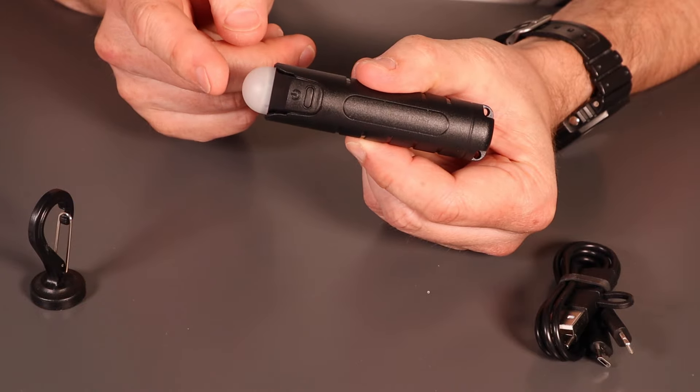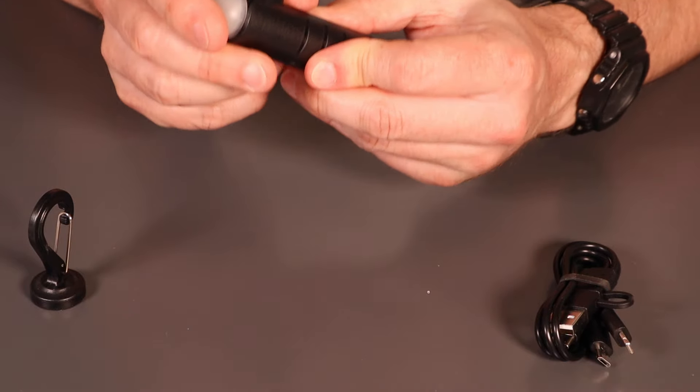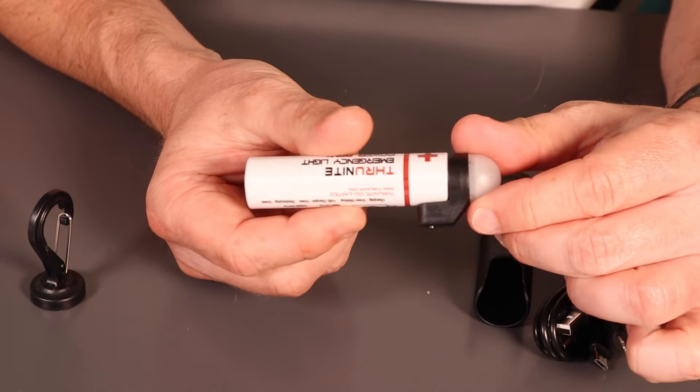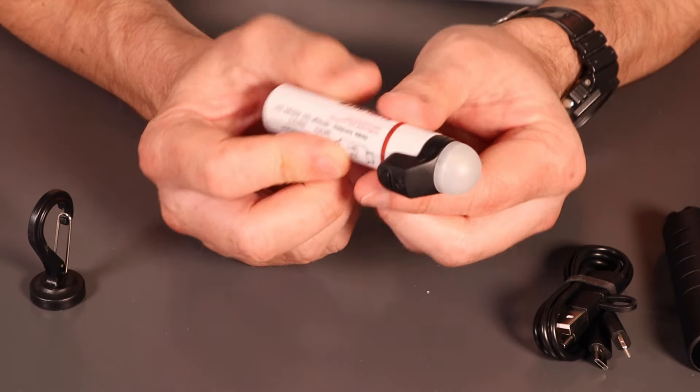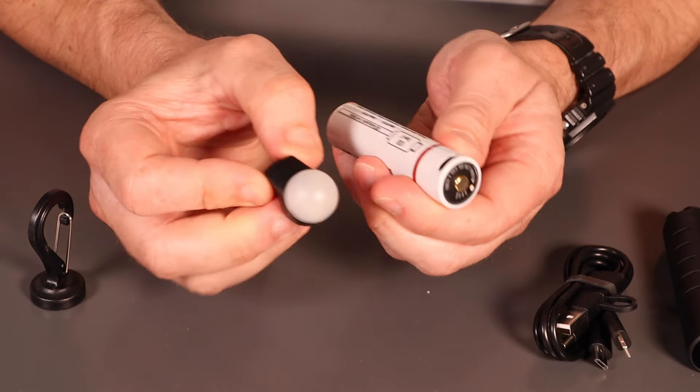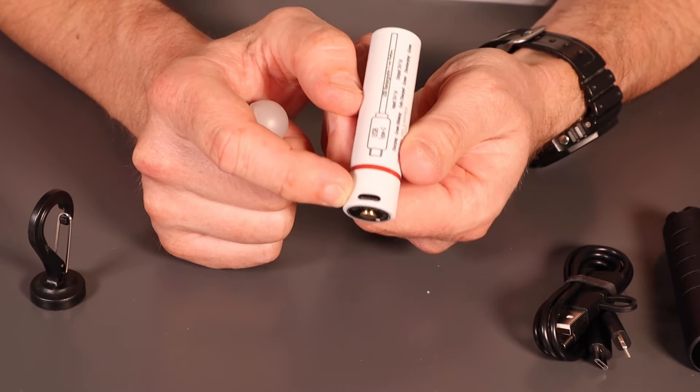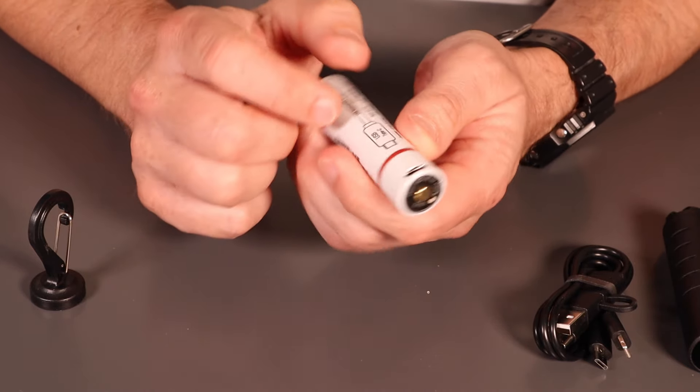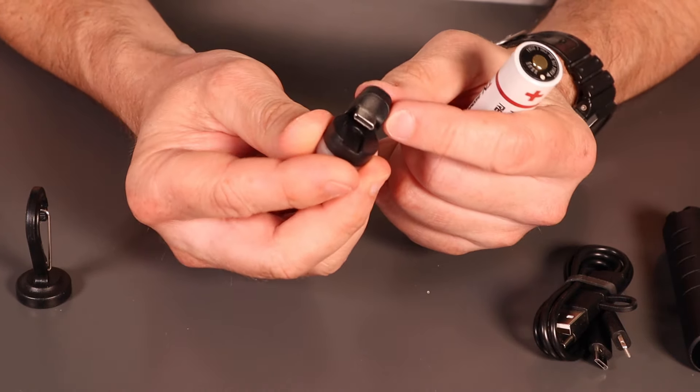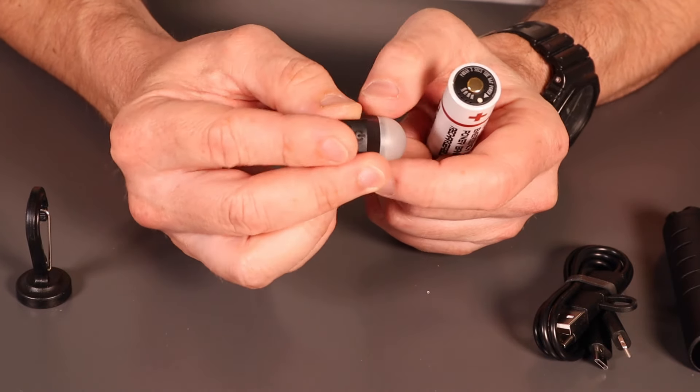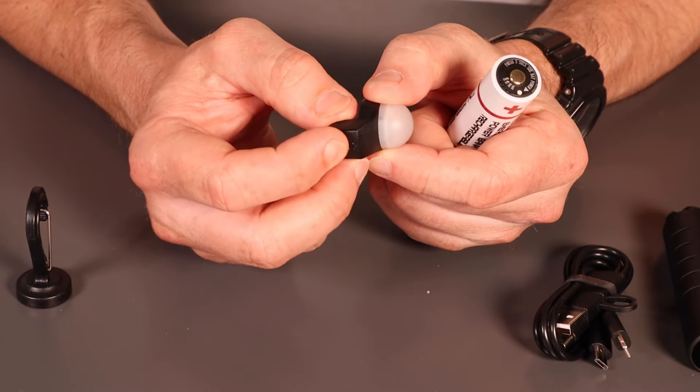You've got the 18650 Thrunite cell, and the illumination unit just plugs into the USB-C port there, which is used to charge this cell. The head unit's obviously got the matching socket and a single push electronic switch there. Now on the top you've got a power indicator.